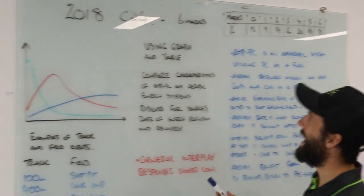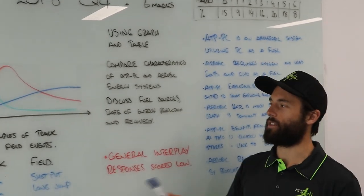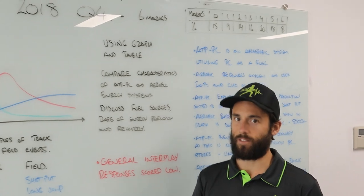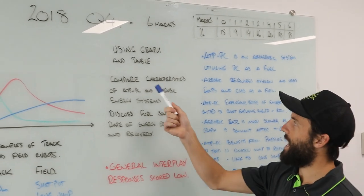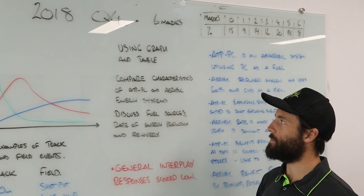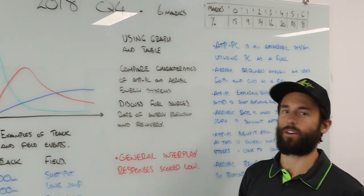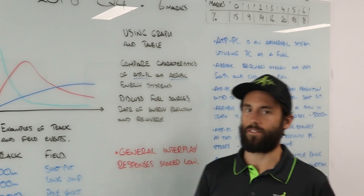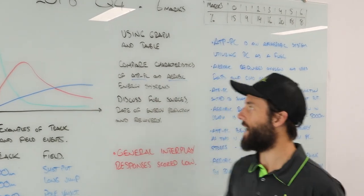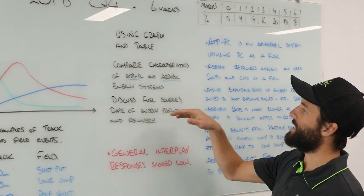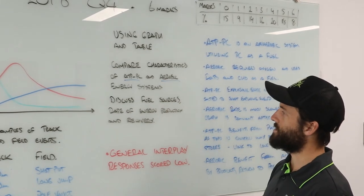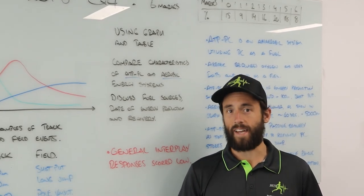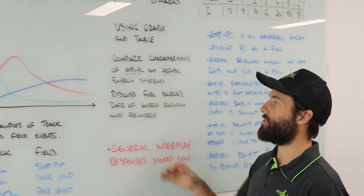The question then asks us, and it does say using the graph and the table, so anytime we say using the graph and the table, obviously make sure we want to use those. Compare the characteristics of the ATP-PC and the aerobic energy system. When you get there, make sure ATP-PC, aerobic - there's no mention of the anaerobic glycolysis system, so we're not going to worry about that. It says discuss the fuel sources, the rate of energy production, and the recovery. It's basically a quite vague question.